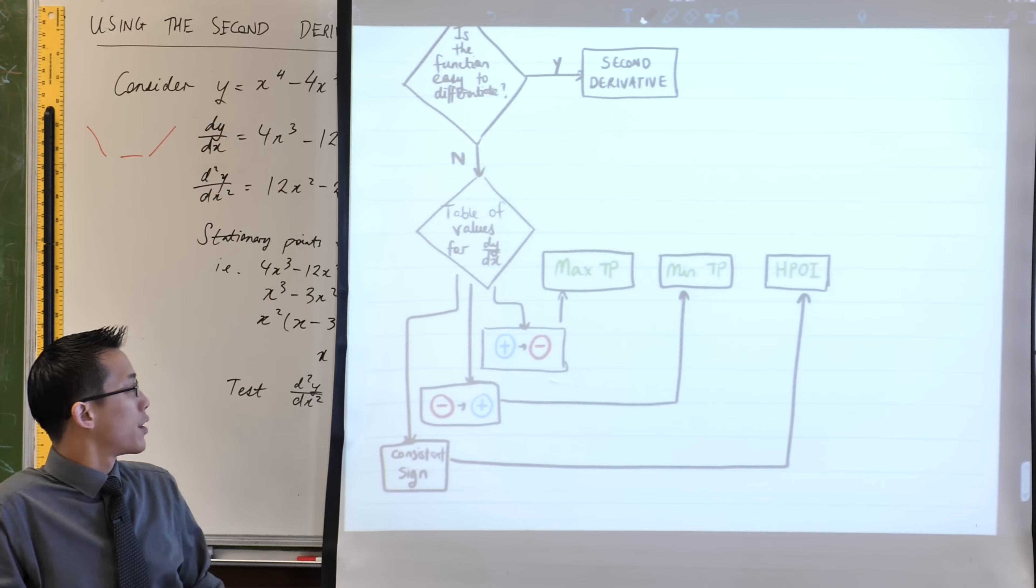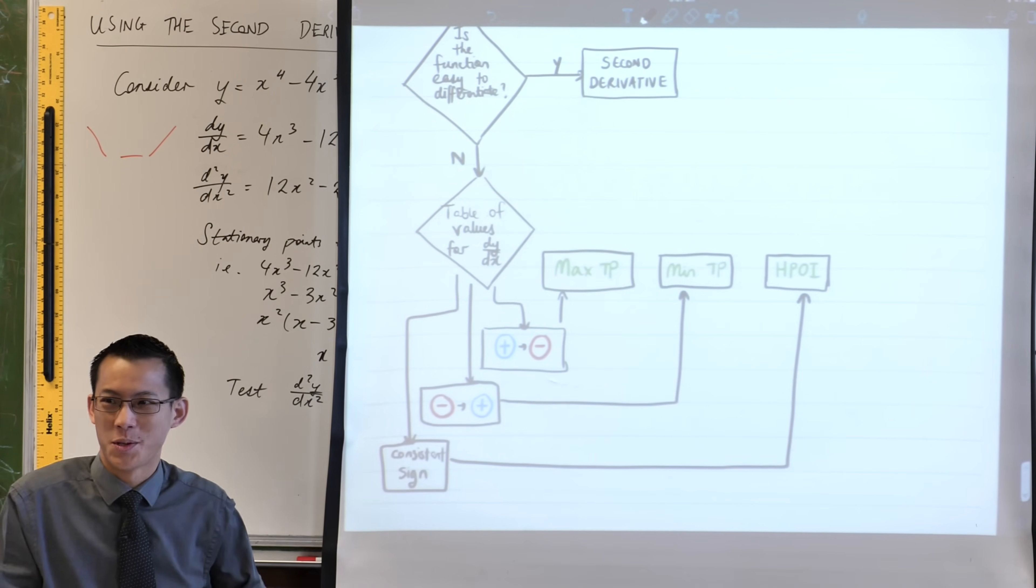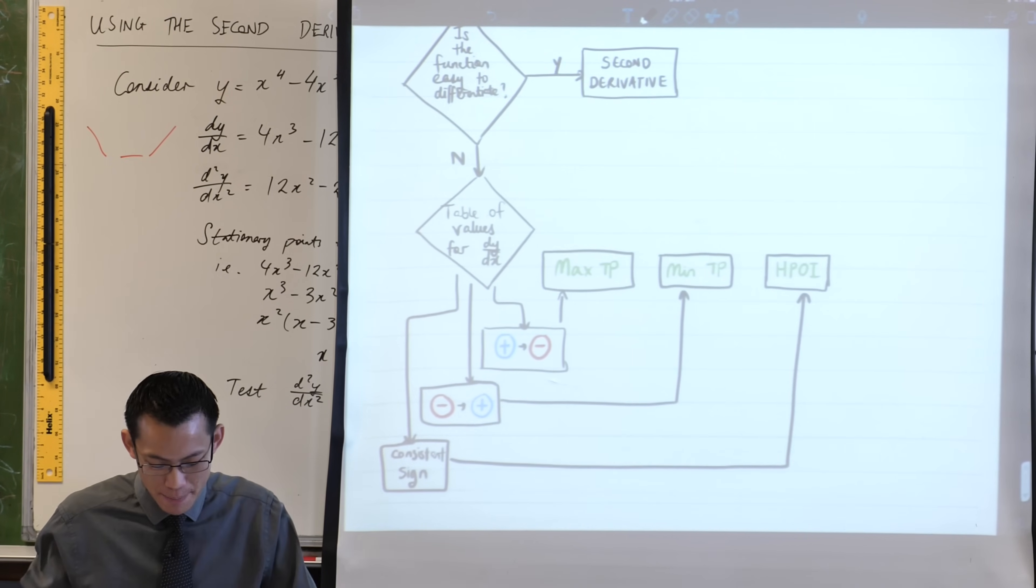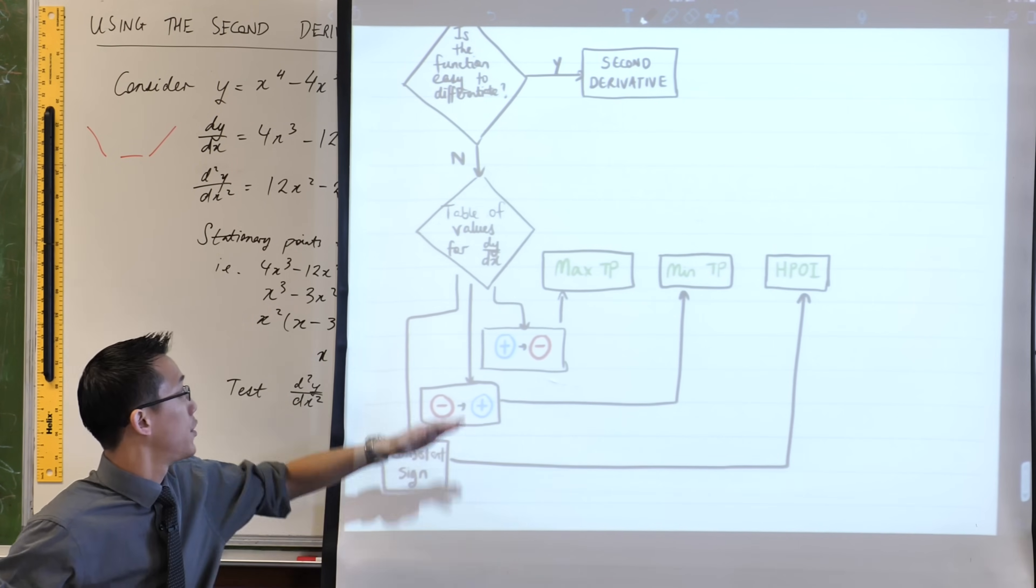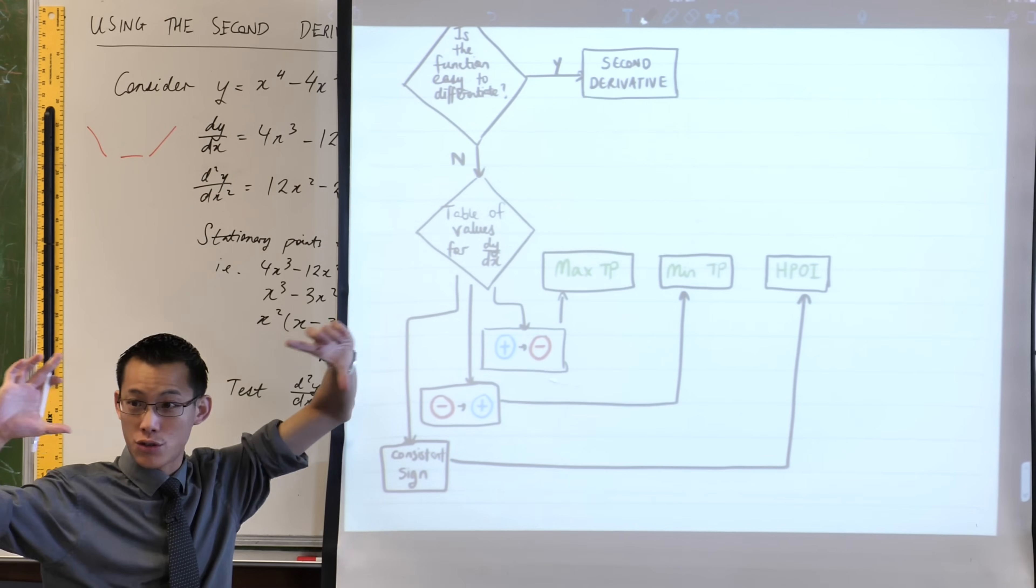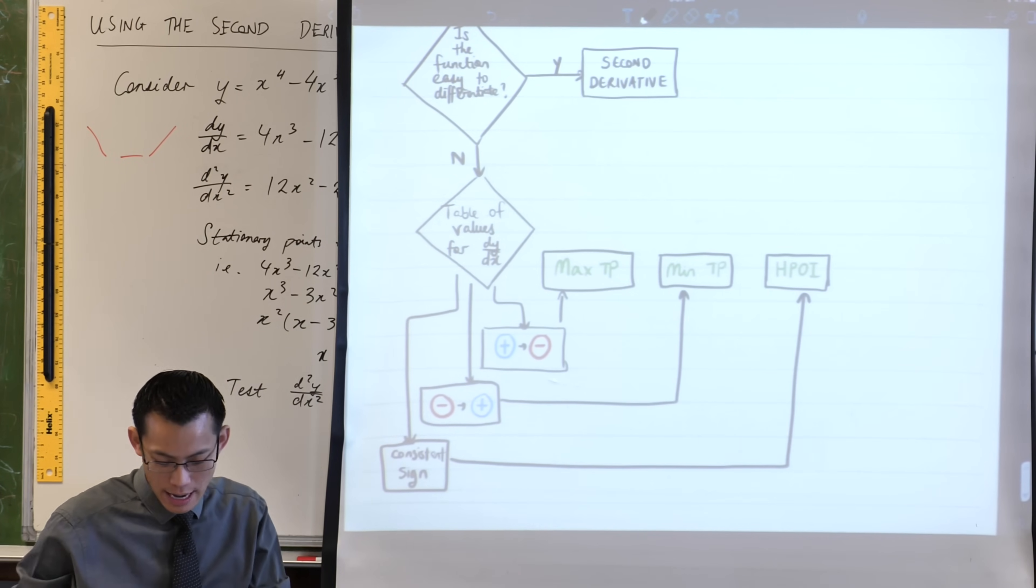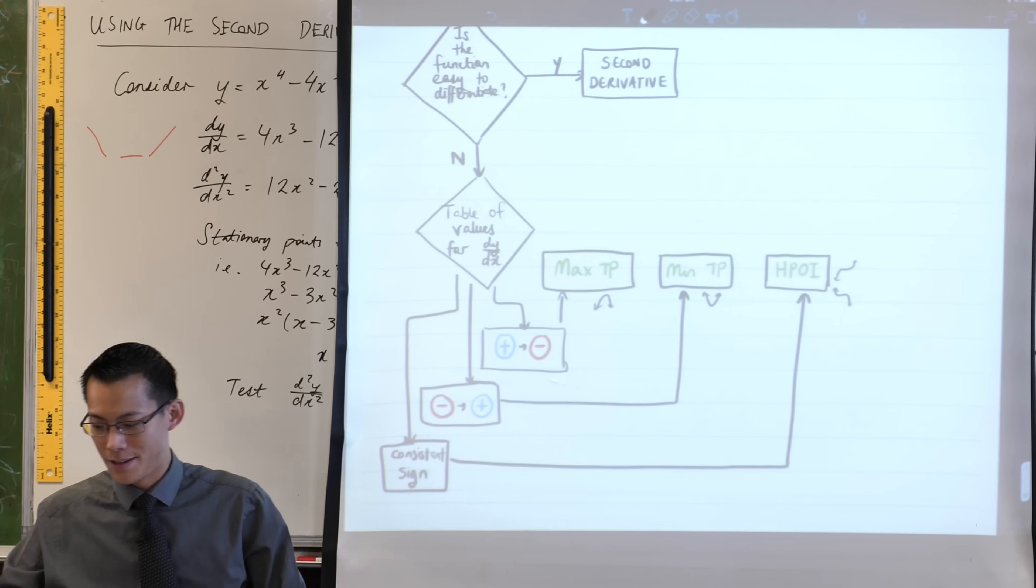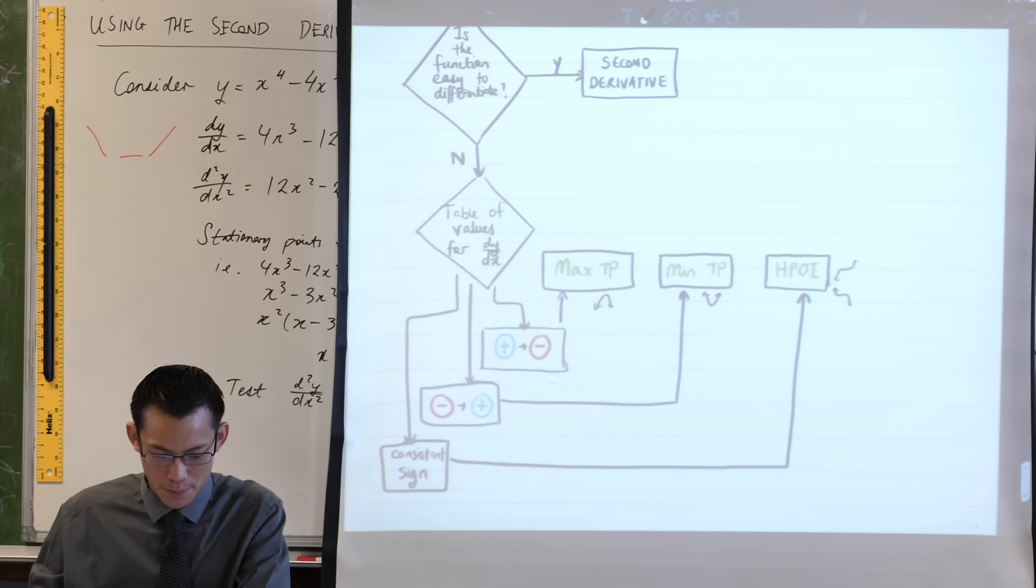If you have a consistent sign on either side of your stationary point, then you know it is a horizontal point of inflection. Okay, so I told you it was a complicated flowchart. We now have the entire thing mapped out for if we went through the first derivative. We tested out the table of values, we drew the thing up, and from there we can say it's a maximum, it's a minimum, or it's one of these weird funky horizontal points of inflection.